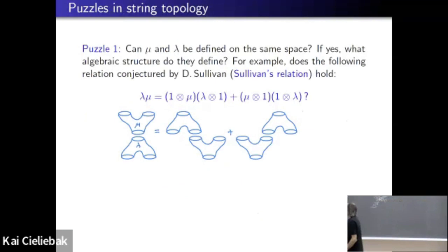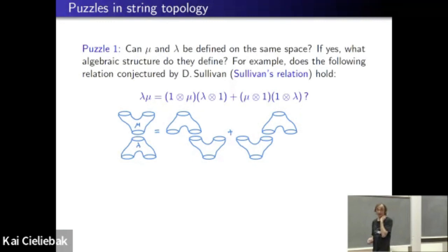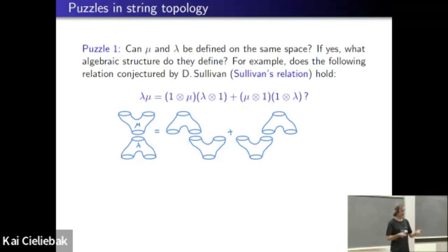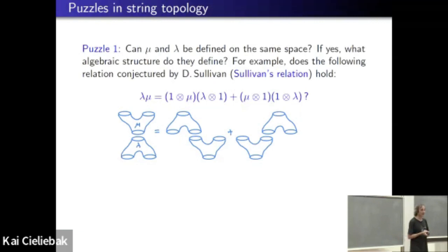In relation to this product and coproduct, some puzzles arose. We have a nice product on homology of Λ and a coproduct on the relative homology. Thinking of the based loop space with its Hopf algebra structure involving both a product and coproduct satisfying certain algebraic relations, on the free loop space you also want a nice bi-algebra structure. But they're not living on the same space — one is on homology of Λ, the other relative to constant loops. First question: can we put them somewhere on the same space?